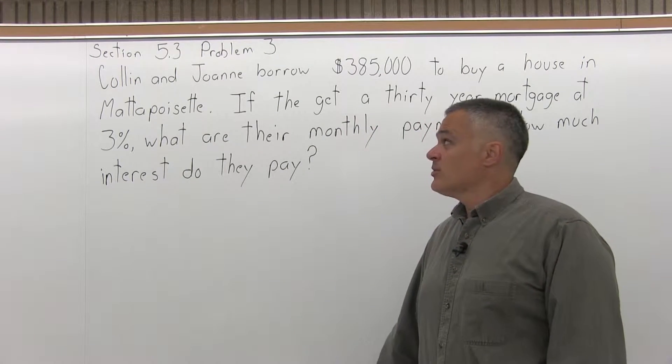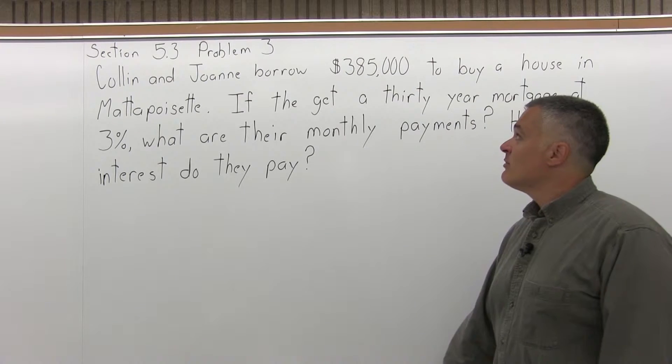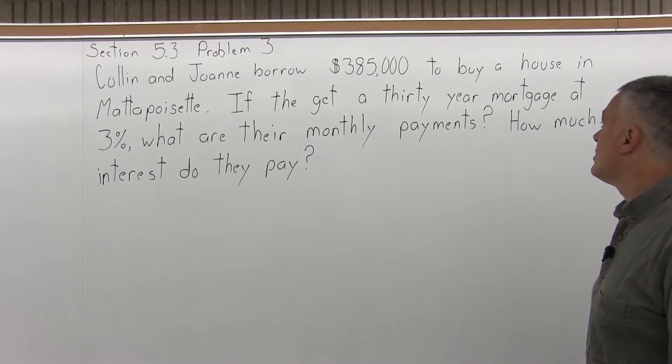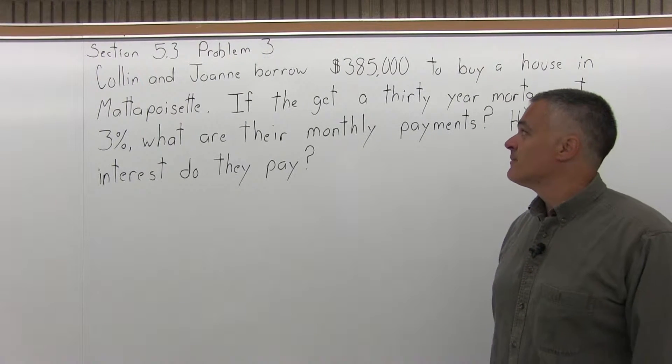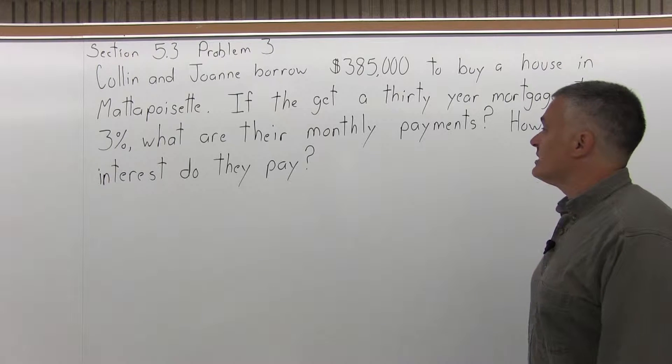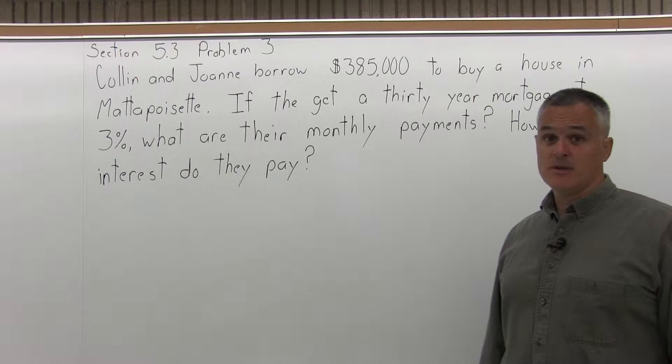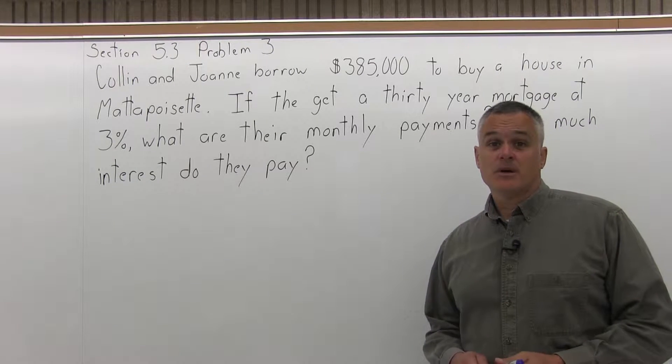This is Section 5.3, Problem 3. It says Colin and Joanne borrow $385,000 to buy a house in Mattapoisett. If they get a 30-year mortgage at 3%, what are their monthly payments and how much interest do they pay?